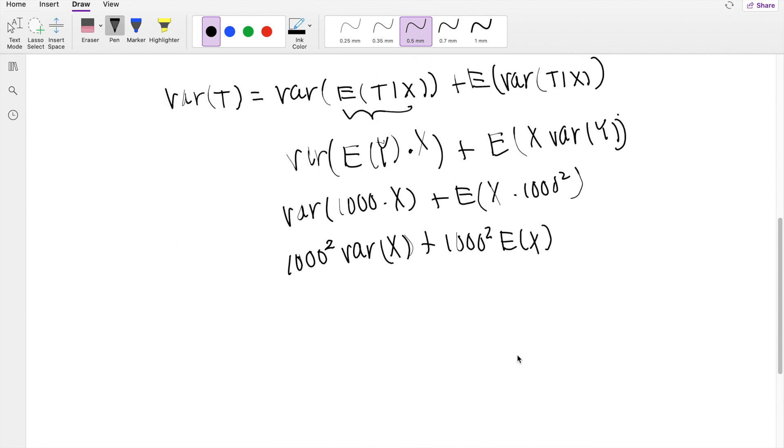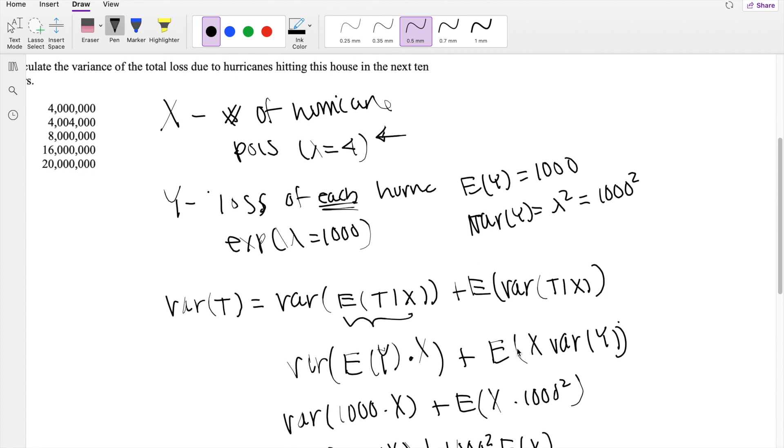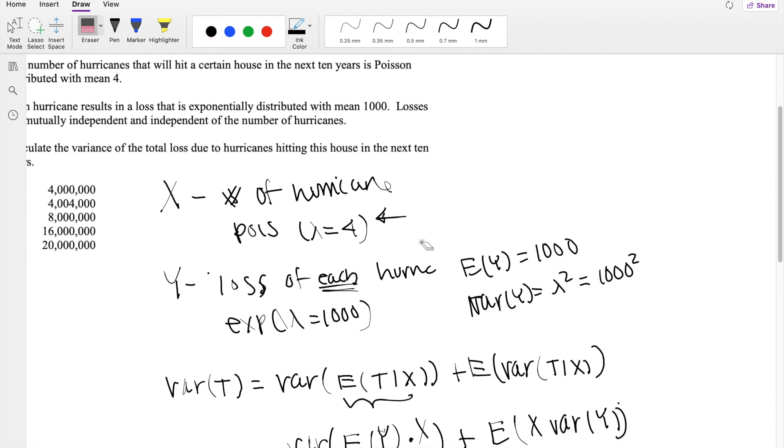So now, when we're asked to find the variance of X and expectation of X, we know X is a Poisson distribution, so expectation of X is just going to be mean. And variance of X is also just going to be lambda, which is equal to 4.